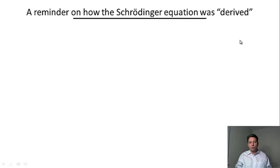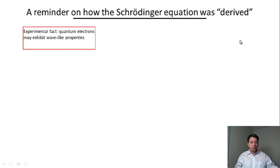We followed the logic that early practitioners such as Schrödinger used. The first piece of information was the experimental fact that quantum electrons and other quantum particles may exhibit wave-like properties.